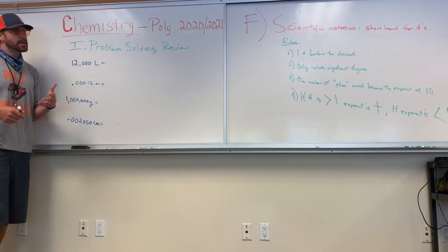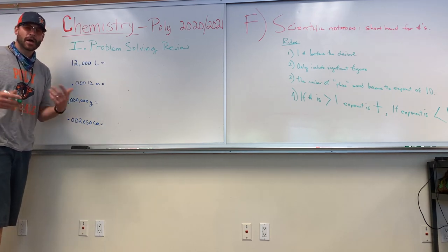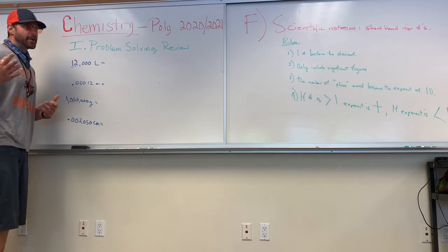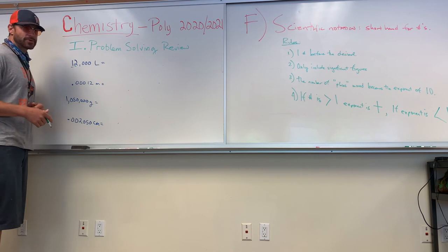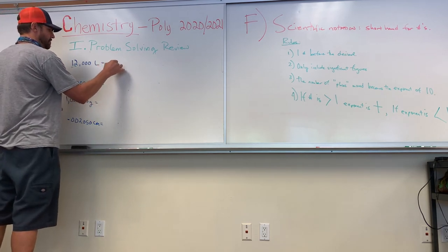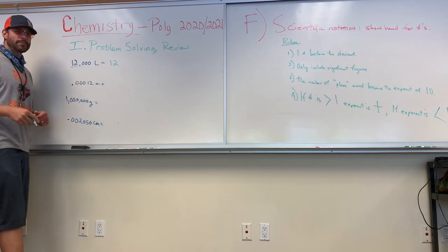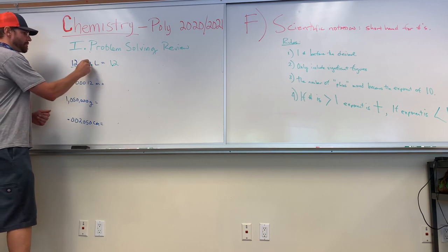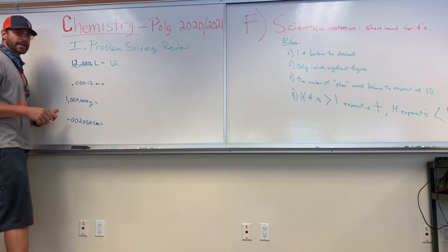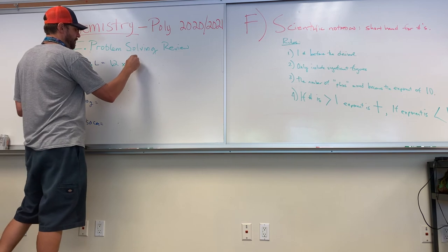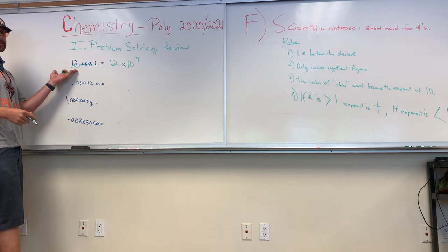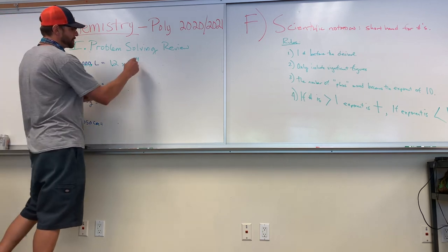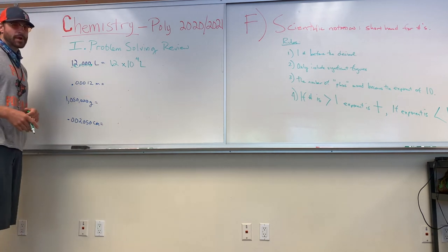For example, 12,000 liters: the 1 and 2 are significant; the three trailing zeros have no decimal, so not significant. Write just 1.2. To get one digit before the decimal, I move the decimal four places to the left. 12,000 is greater than one, so the exponent is positive four. The answer is 1.2 × 10⁴ liters. For 0.00012 meters: 1 and 2 are significant; the three leading zeros are not. Write 1.2, move decimal four places to the right — number is less than one — so 1.2 × 10⁻⁴ meters.